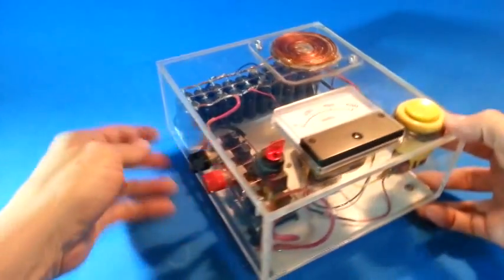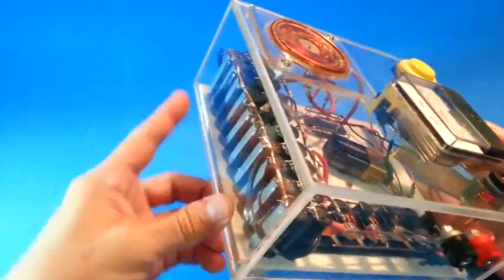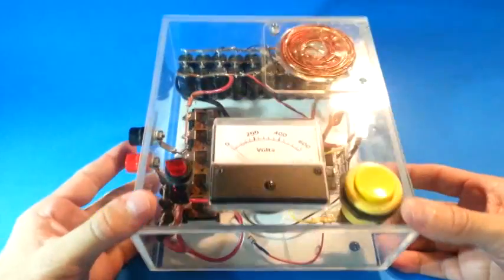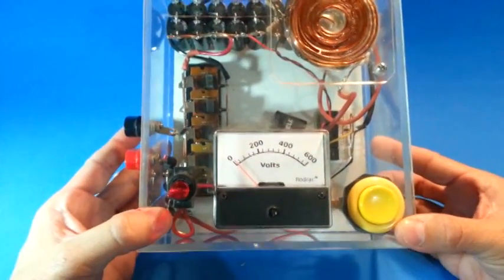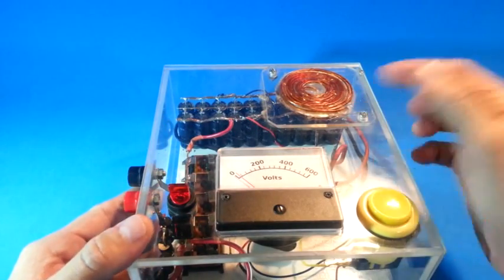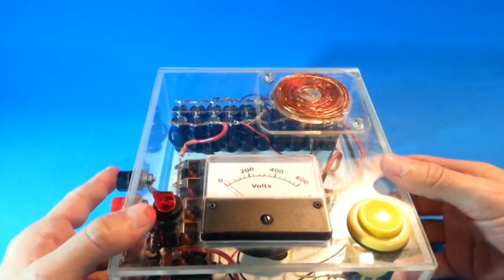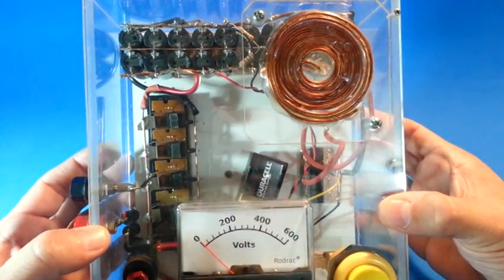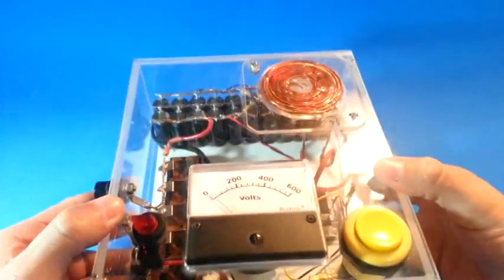We have here a capacitor bank that is charged to a value of about 500 volts maximum. When they are discharged through the coil, that generates a really large current in the inductor, which is what creates the magnetic field.